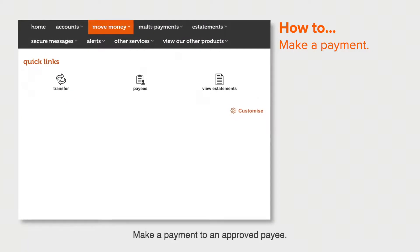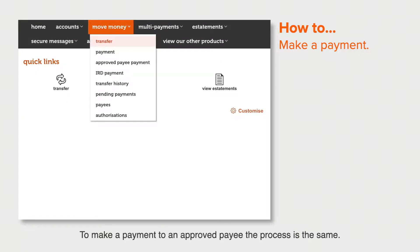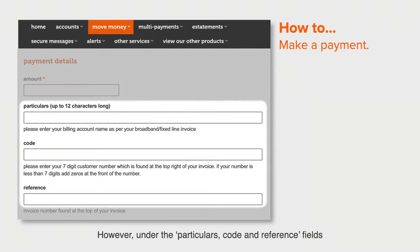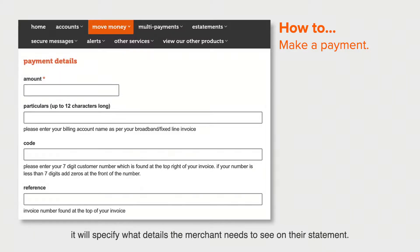Make a payment to an approved payee: to make a payment to an approved payee, the process is the same. However, under the particulars, code and reference fields, it will specify what details the merchant needs to see on their statement.